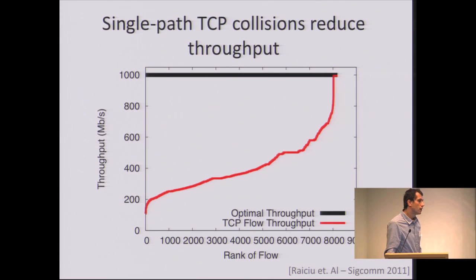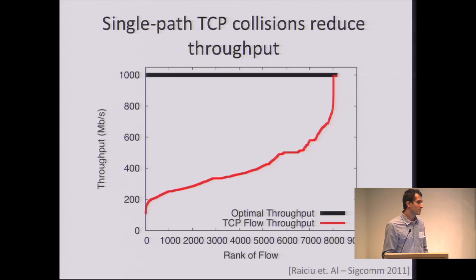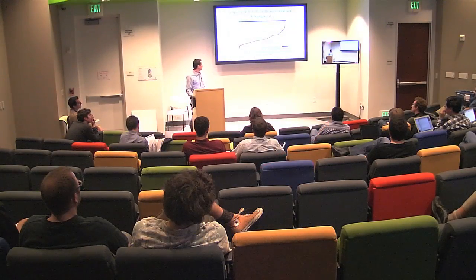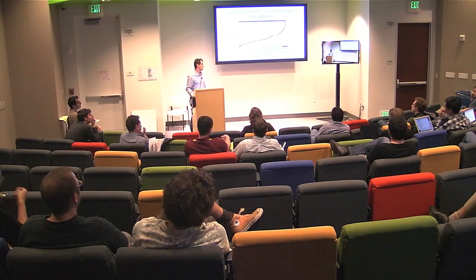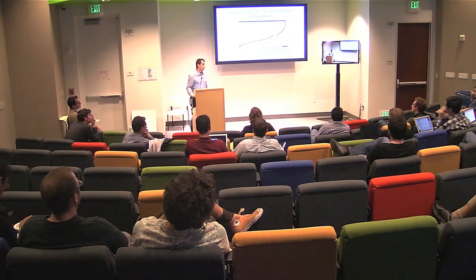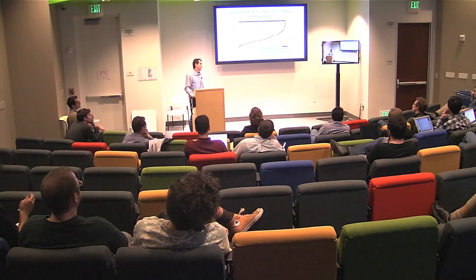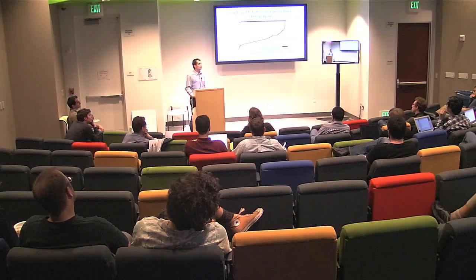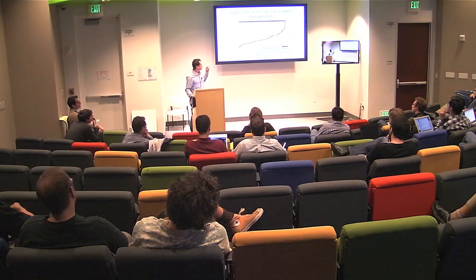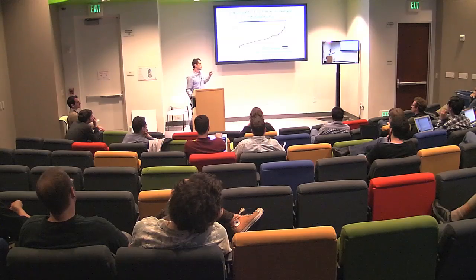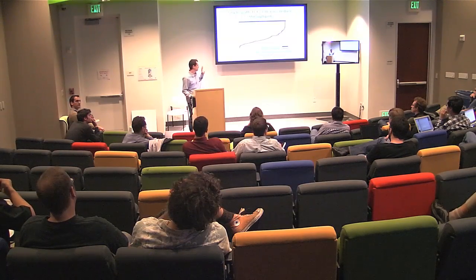Question: what were the flow sizes in this experiment? These are just unbounded flows — you start a TCP connection and see the throughput you get. If all flows are small, you shouldn't see any effects. If they're all big, you'll still see effects, but smaller. These collisions are persistent, and this traffic matrix is actually the worst case: you have the smallest number of flows that could fill the network, and they don't fill it.